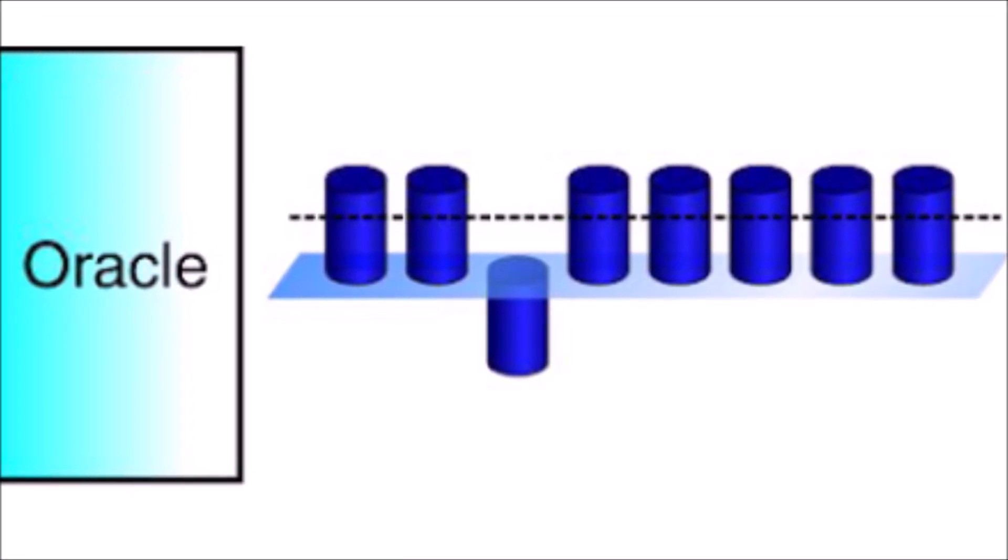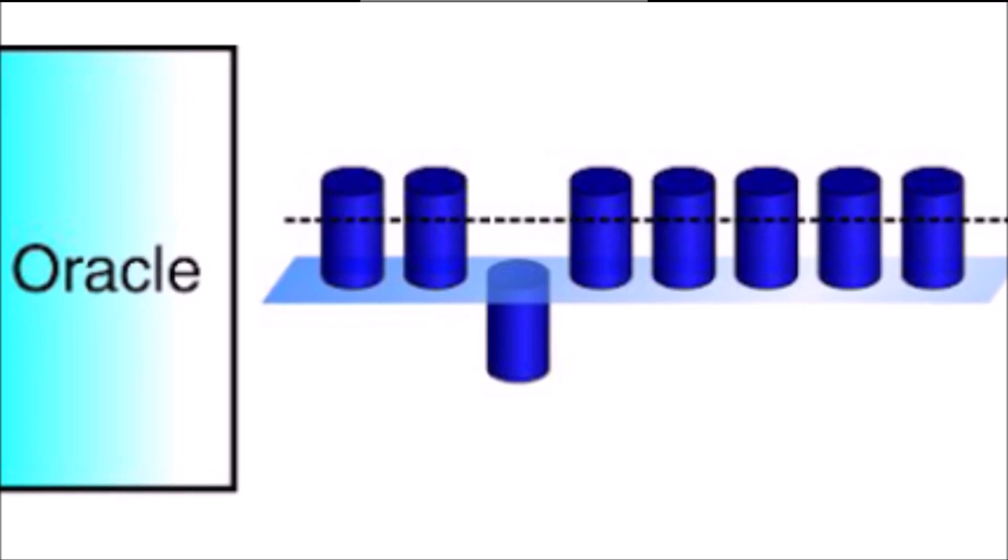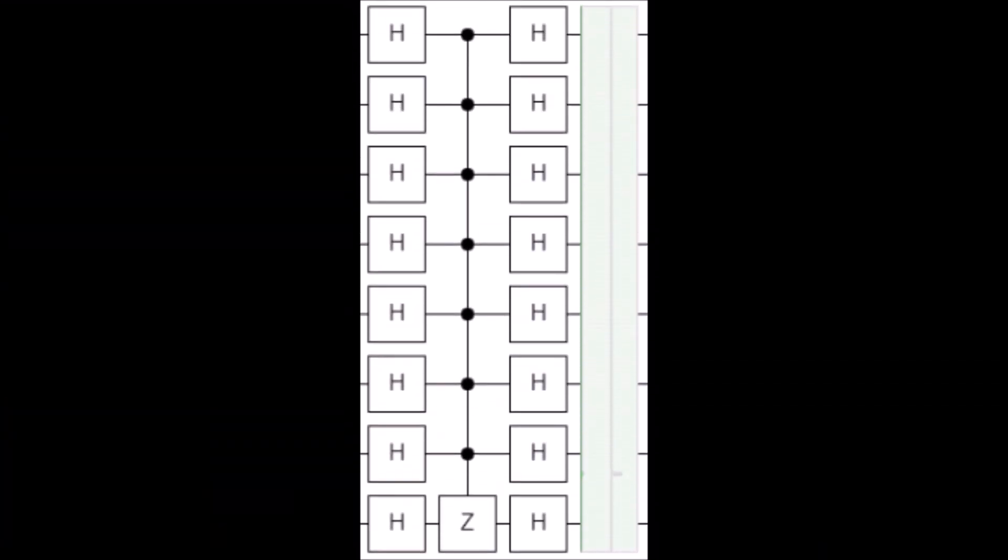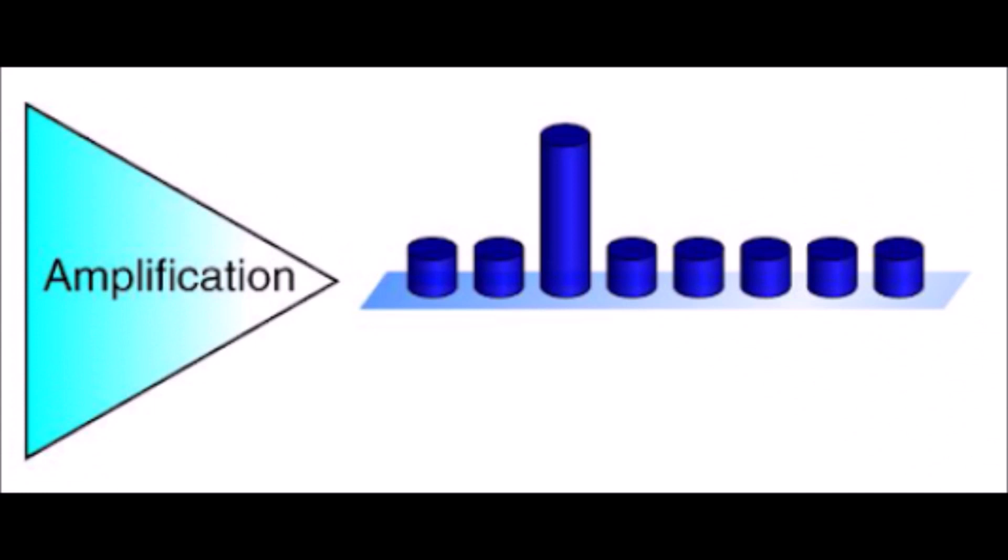Next is the funky sounding diffusion transform. This part of the algorithm basically consists of a Hadamard transform, then a phase shift, then another Hadamard transform. The way that this state is isolated is through a lot of these transformations that take advantage of the difference in amplitude to single out that single state that you're looking for, increasing the probability of that state being measured.